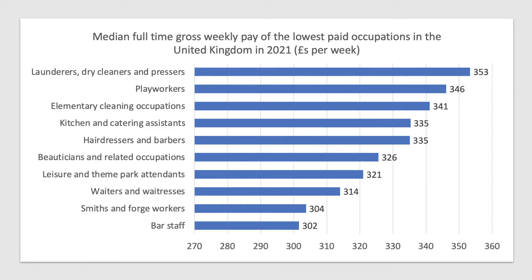This is the data on the lowest paid jobs in the UK in 2021 — median full time gross weekly pay. Bar staff had a median pay of £302 a week for full time work. Other low paid occupations include smiths and forge workers, people working in food and hospitality, waiters and waitresses, leisure and theme park attendants, beauticians and nail salons, catering assistants, playgroup and elementary school workers, and cleaners.